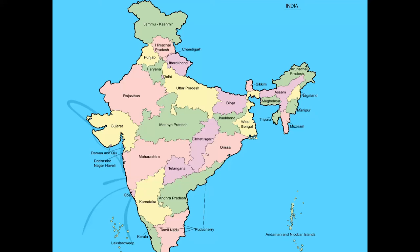The northernmost state is Jammu and Kashmir, the southernmost is Tamil Nadu, the westernmost is Gujarat, and the easternmost is Arunachal Pradesh. India is the second most populated country in the world with over 1.21 billion people, more than a sixth of the world's population. The first most populated country is China and the least populated is Vatican City.